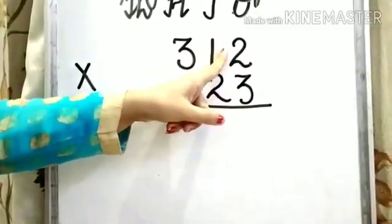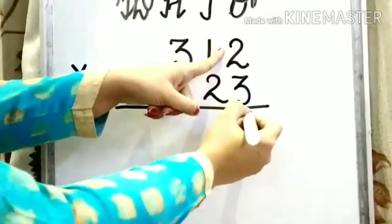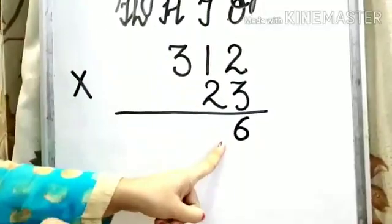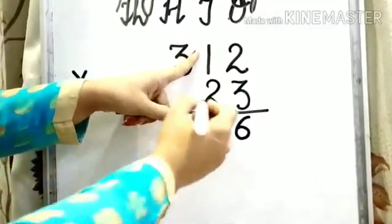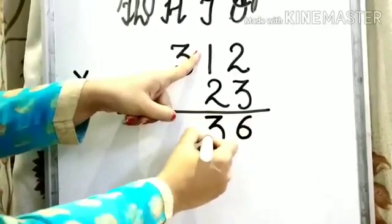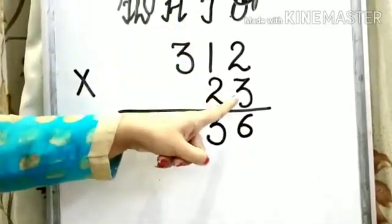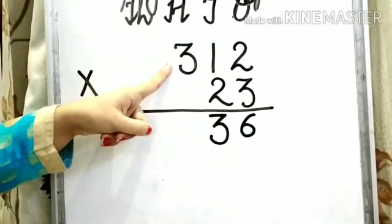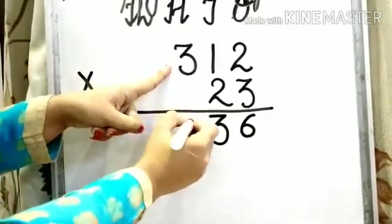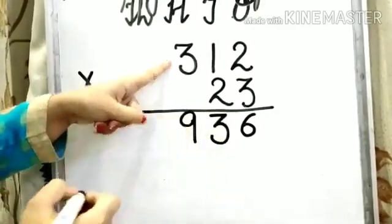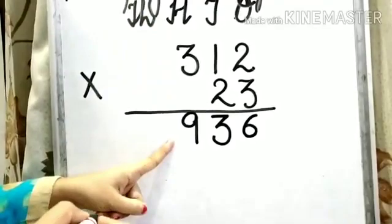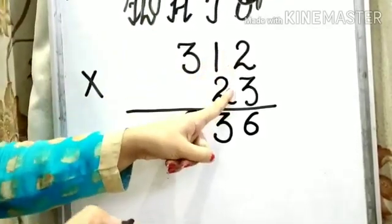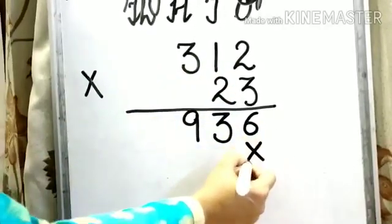3 times 2 is 6, so write down 6 under the 1s column. 3 times 1 is 3, write down 3 under the 10s column. 3 times 3 is 9, so write down 9 under the 100s column. Now we have done the multiplication of 312 by 3, so we need to put a cross over here.